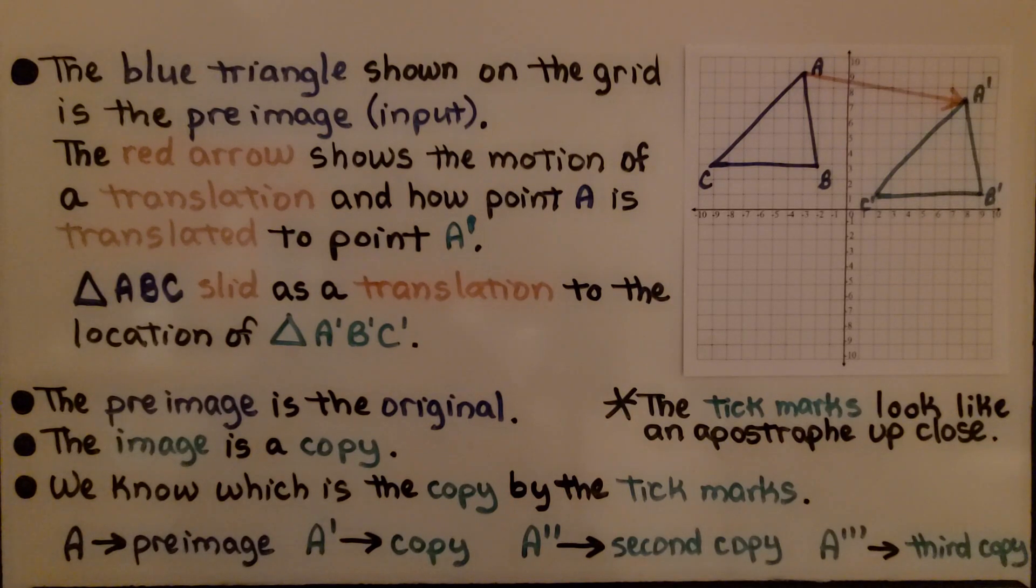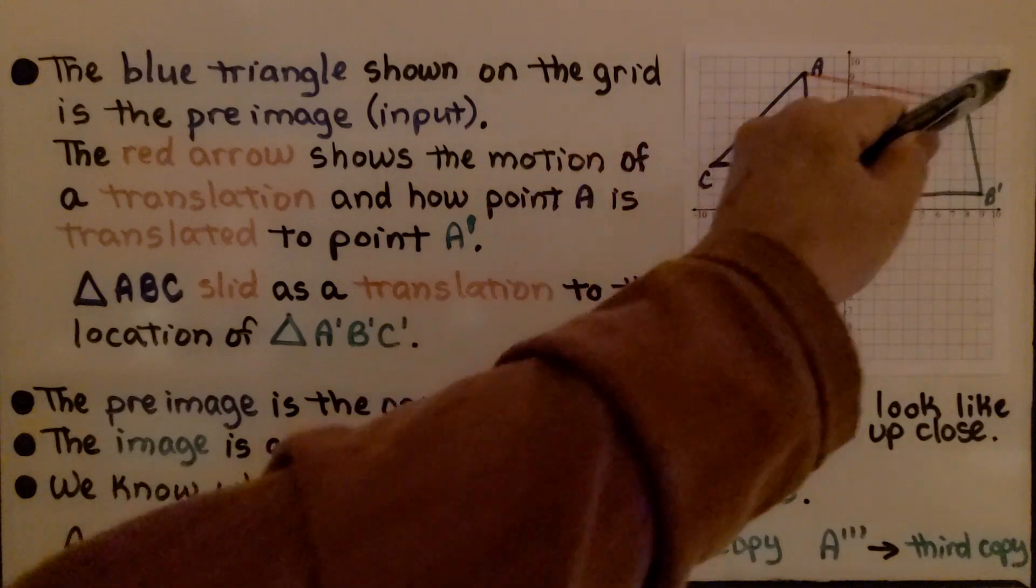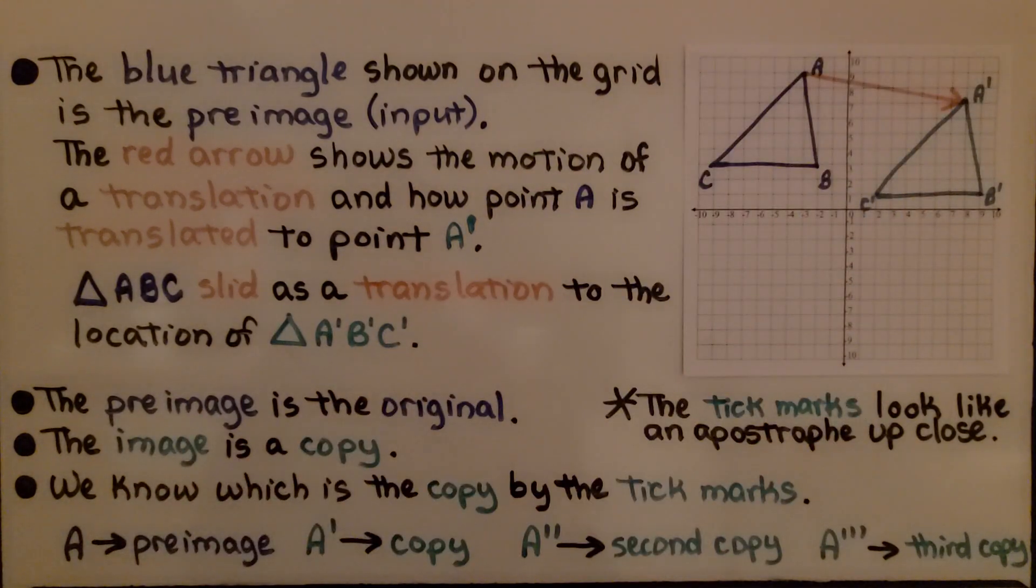The image is a copy. The tick marks, these little lines here, look like an apostrophe up close. It's not an exponent, it's not a one—it's a little tick mark that looks like an apostrophe when you get up close.